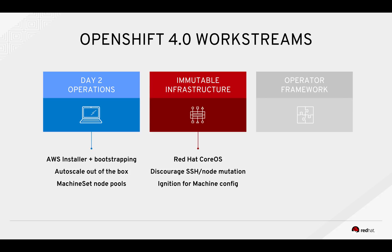Some of the work streams that enable this idea are a redesigned installer. For OpenShift 4.0, the first platform we're going to support is Amazon. This has a new bootstrapping workflow that provisions a lot of the infrastructure for you, so you get things like autoscaling out of the box, doing different node pools — having CPU and GPU workloads sitting next to each other. All that under the hood is powered by that new operating system, Red Hat CoreOS, which is all about immutability.